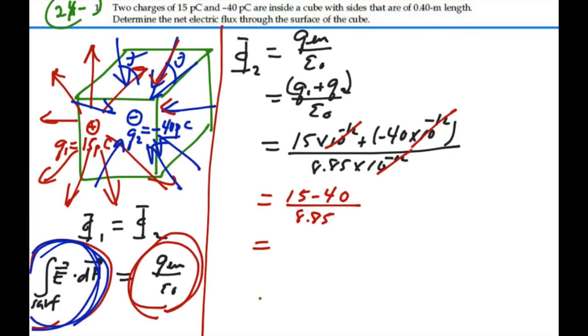And so that is going to equal a negative 25 divided by 8.85, a negative 2.82. And the units of flux would be a newton meter squared per coulomb. So that's a negative 2.82 newton meters squared per coulomb. That is our net flux through the surface of this cube. The negative means that we have more flux going into the cube than we have going out.